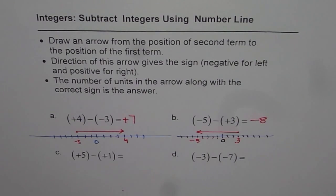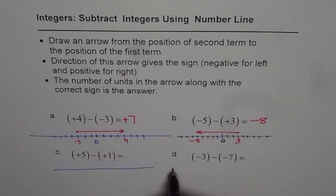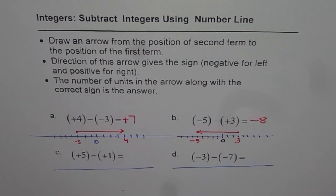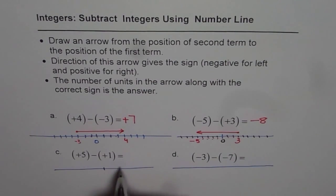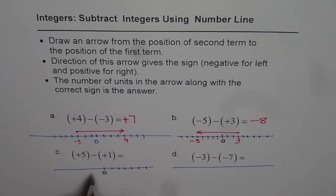Let's practice and do two more. I would like you to pause the video, solve the question, and then check with my answer. Our steps are very clear. First, make your number line. Zero, then positive numbers one, two, three, four, five, six.